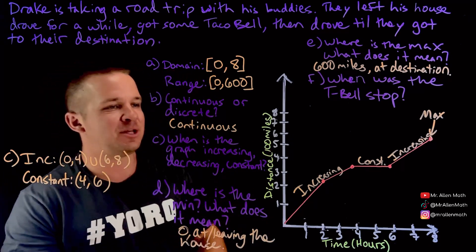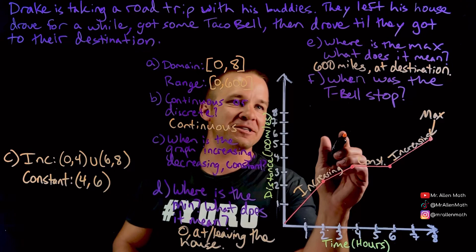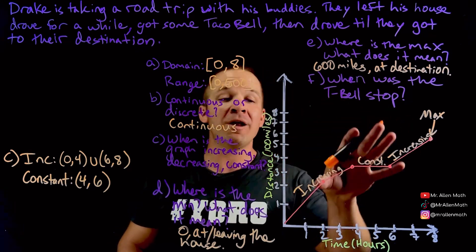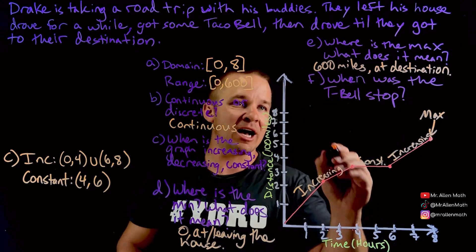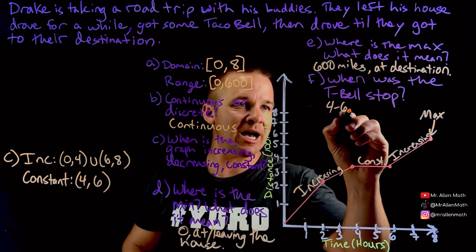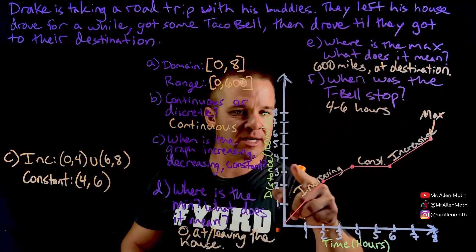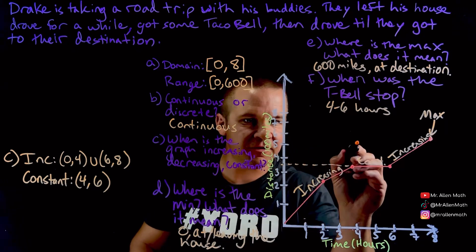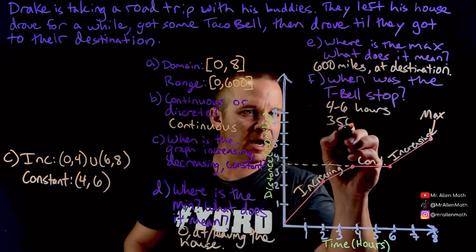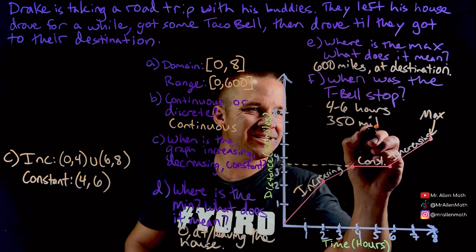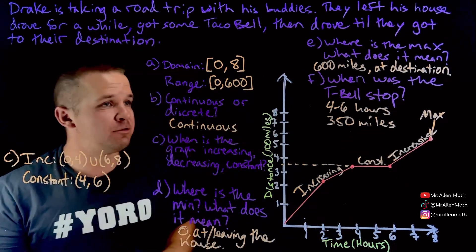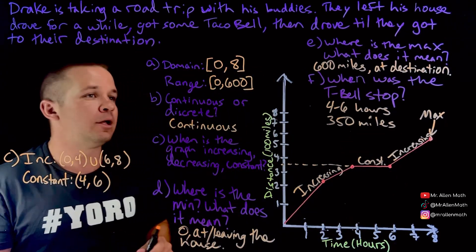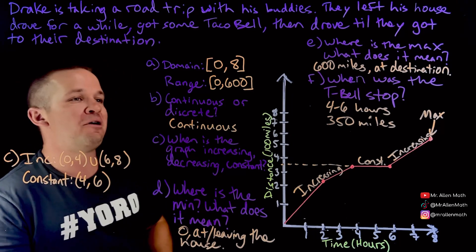And last thing here. When was the Taco Bell stop? The Taco Bell stop was from hours four to six. Alright. So when we're saying when was it, we could say our time, four to six hours. Or you can even say at mile, it looks like maybe like 350, right? 350 miles. They're like, bro, I need some grub. Now they stopped for two hours. I'm not sure why. Whatever. You know, maybe somebody had some trouble.